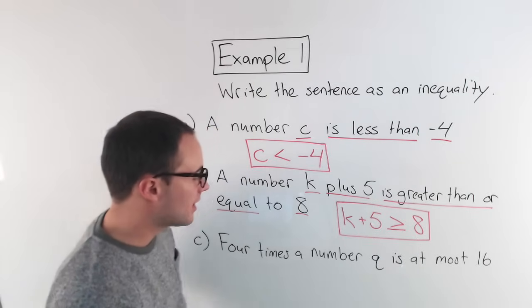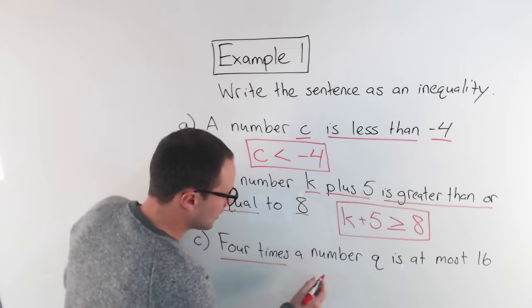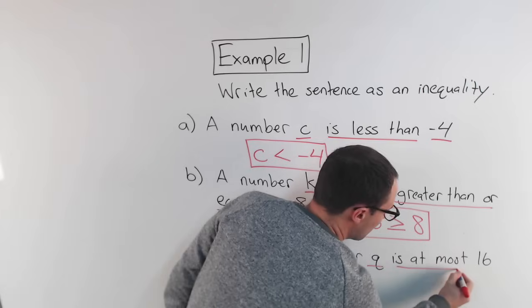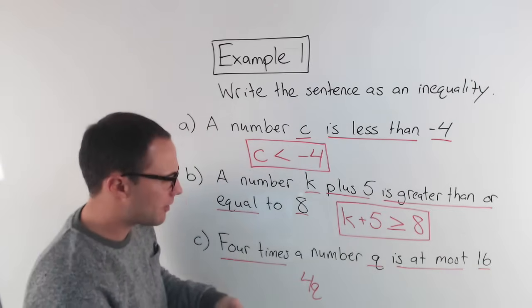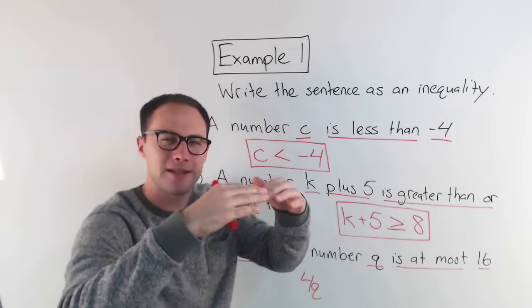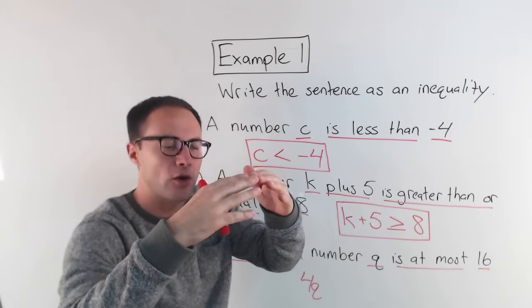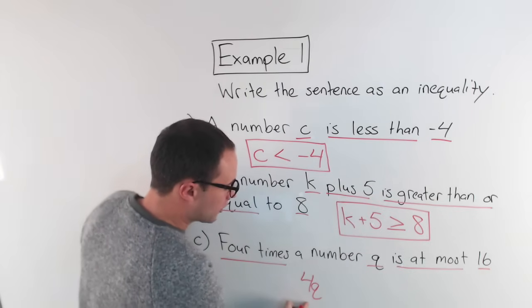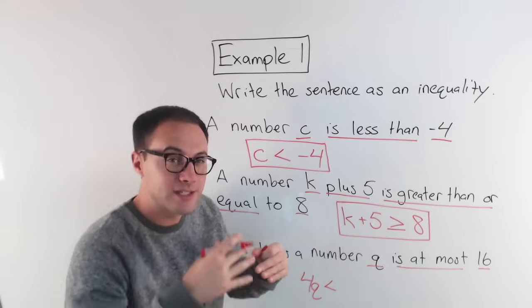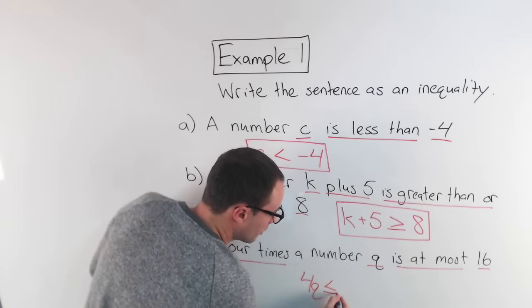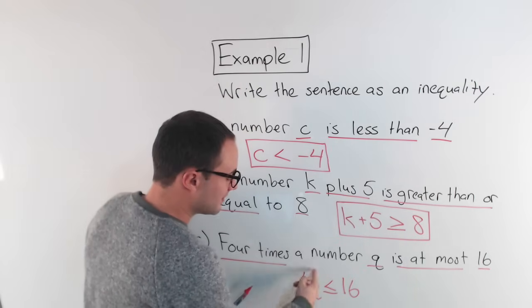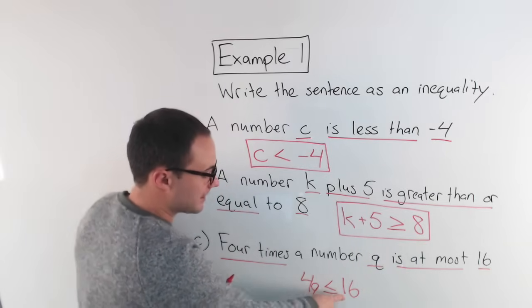Now the last one: 4 times the number Q is at most 16. So that would be 4Q is at most 16. Let's think about that — if something is at most 16, can it be more than 16? No, 16 is the maximum. It has to be 16 or less. Can it be equal to 16? Yes, at most 16 is the maximum, so it can be 16. So 4Q is less than or equal to 16. This 4Q cannot be more than 16.